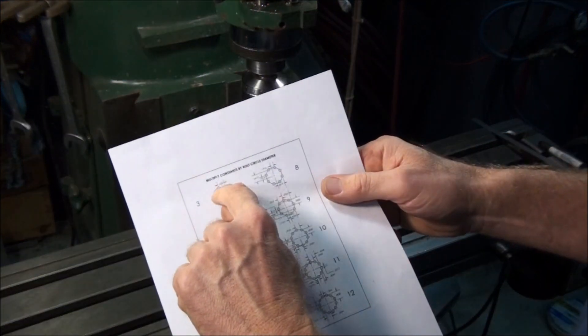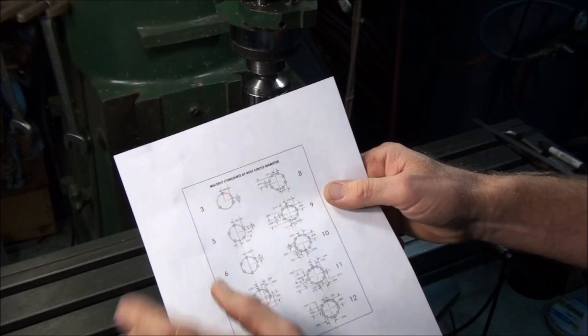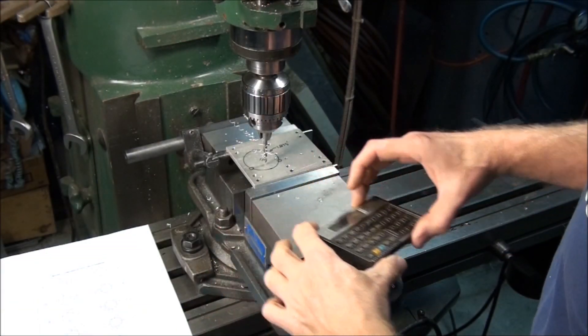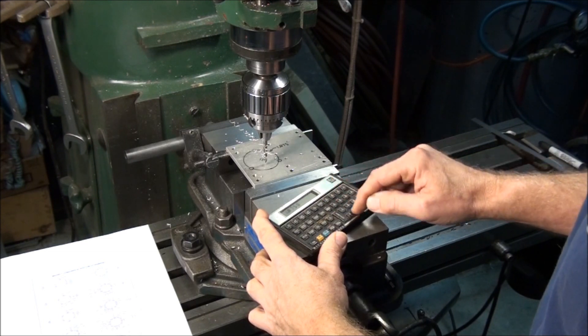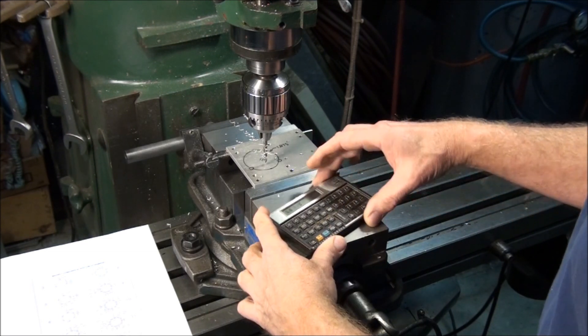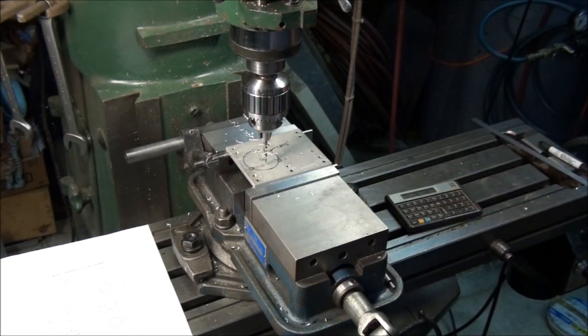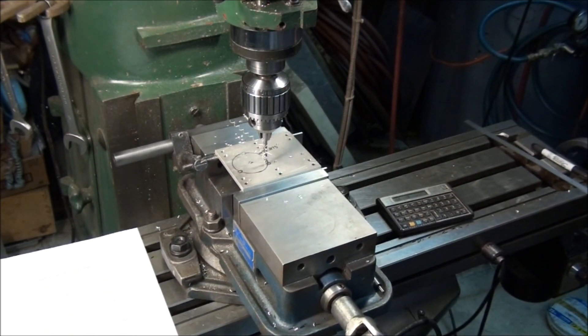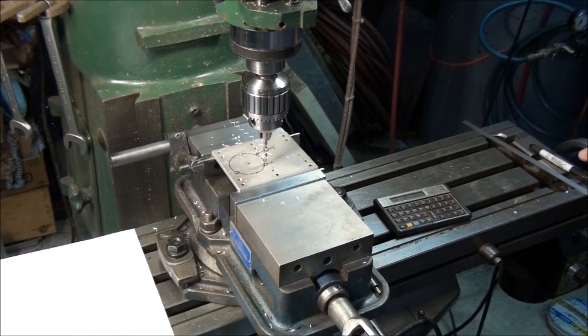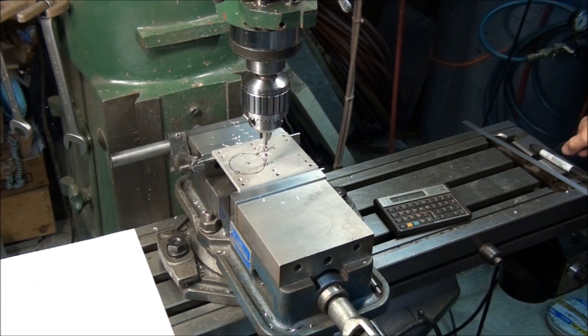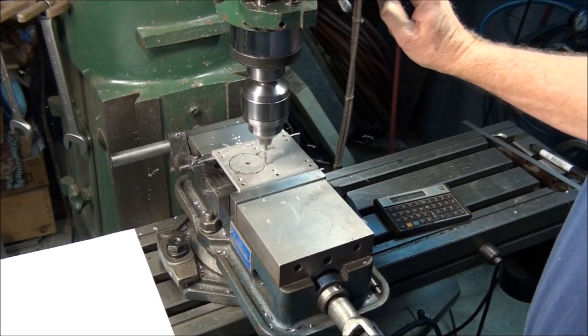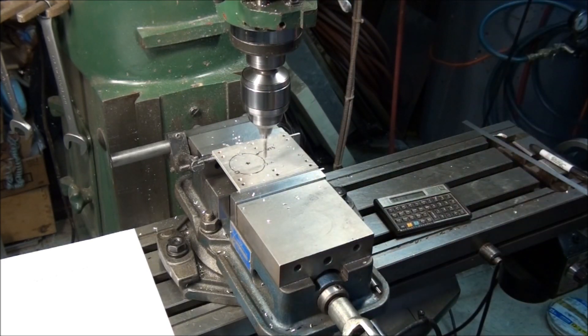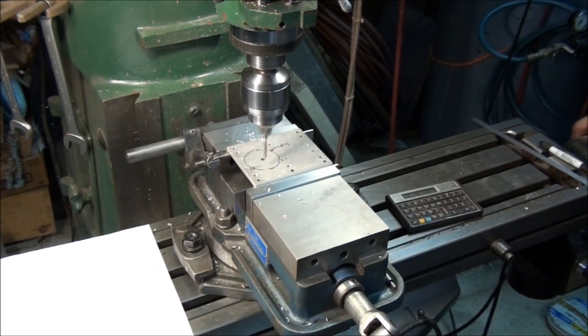Okay, and then the X offset for these two holes is .433 times the diameter of our bolt circle. And that is .8119, so let's go ahead and move over .8119. Right about there, that's a second hole, and the other one's the same offset, just in the other direction.